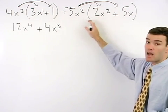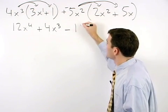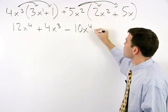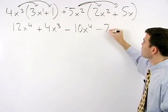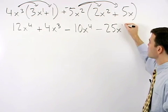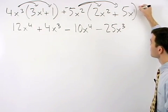Multiplying the coefficients and adding the exponents we have negative 10x to the fourth minus 25x to the third. Remember x can be thought of as x to the first.